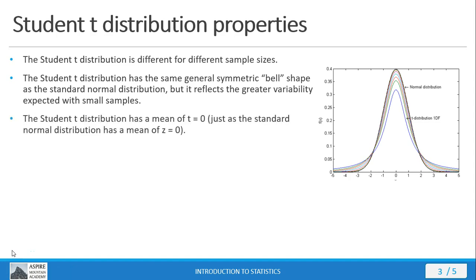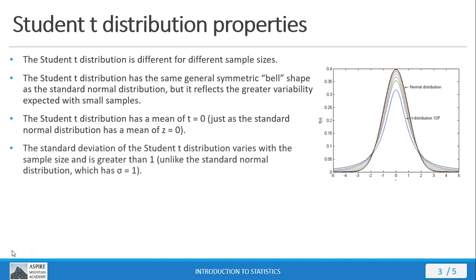Now just like the standard normal distribution, student t-distribution has a mean value of zero. However, because the student t-distribution varies with sample size, the standard deviation is going to be greater than one. This is different from the standard normal distribution, which always has a standard deviation value equal to one.